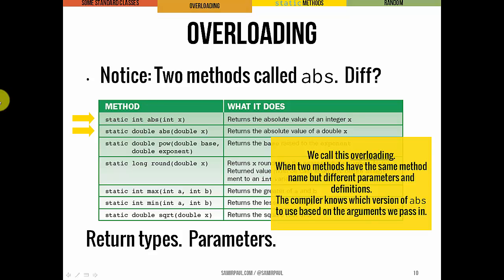And this is really helpful because it means that we can define two different versions of the absolute value method, one of which takes a double and can handle it, and the other of which takes an int and can handle it.